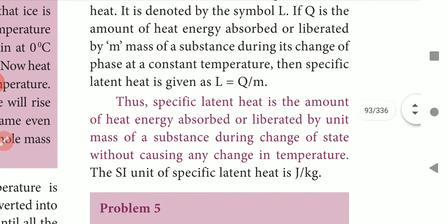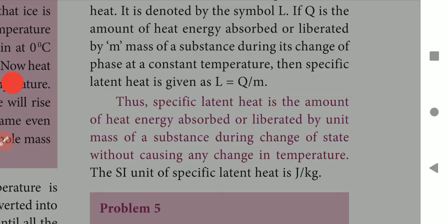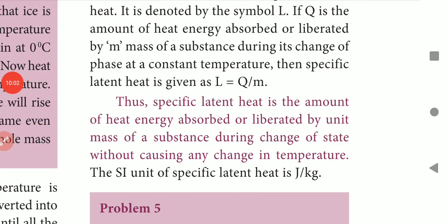The specific latent heat is the amount of heat energy absorbed or liberated by a mass of a substance during change of state without causing any change in temperature. The heat energy absorbed or liberated without a temperature change is called latent heat energy. The SI unit of latent heat energy is Joule per kg.